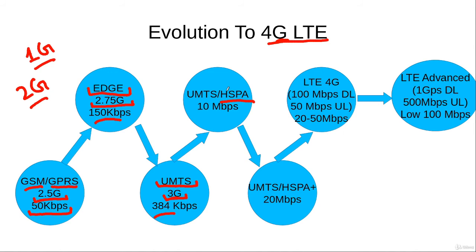With HSPA, the average data rate a user experienced under normal circumstances increased to 10 megabits per second. Then HSPA+ technology was used to further enhance data rates of the UMTS systems, and the user-experienced data rate then increased to 220 megabits per second.